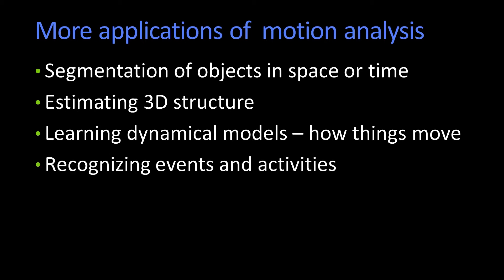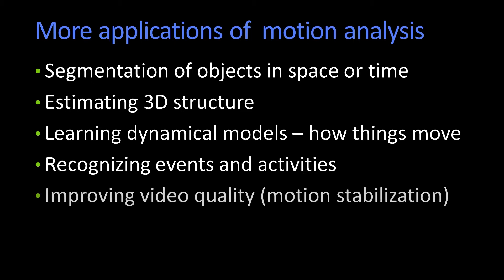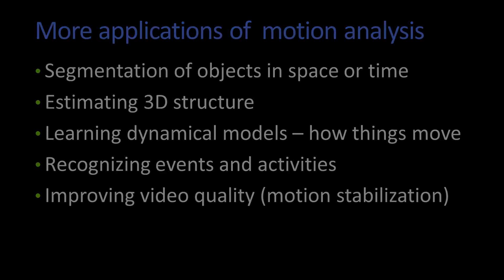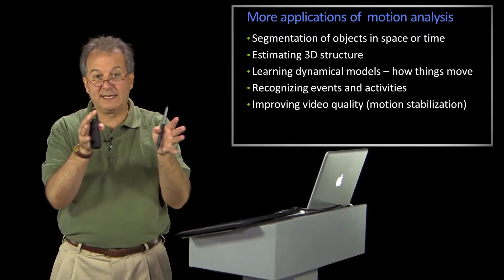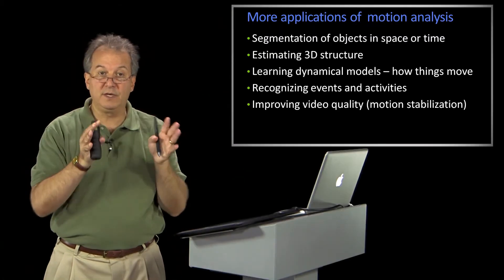Recognizing events and activities — you'd like to be able to say, what just happened in the video? So it's not just object recognition, it's action recognition. And finally, you might just want to process the video and understand the motion to improve the quality. So you might do motion stabilization, so that you've got this jerky camera and you'd like to get a nice smooth video out.